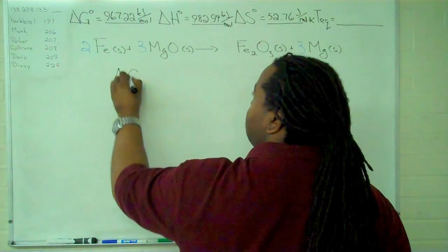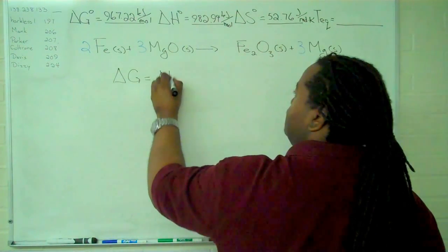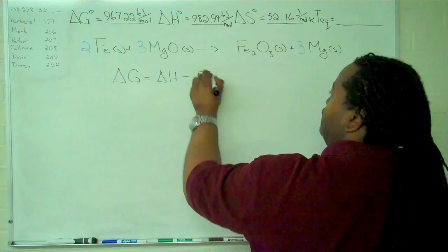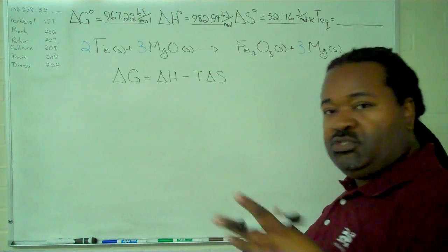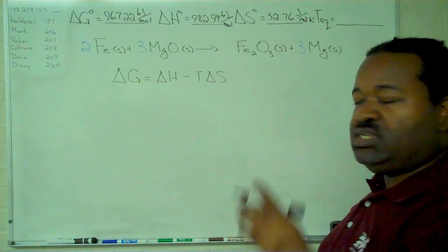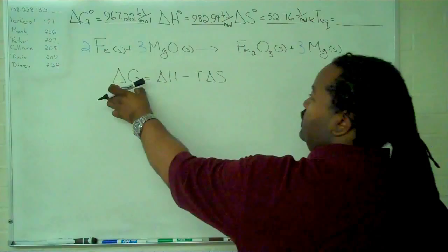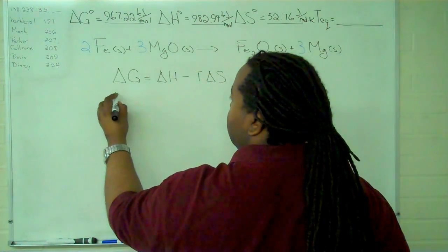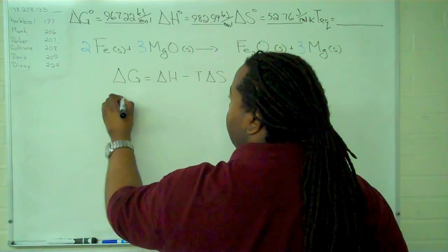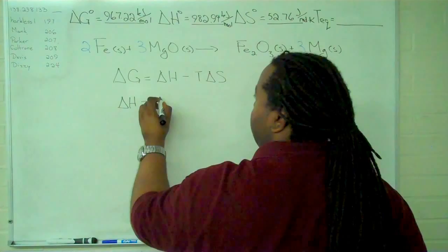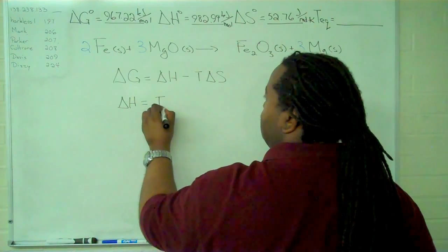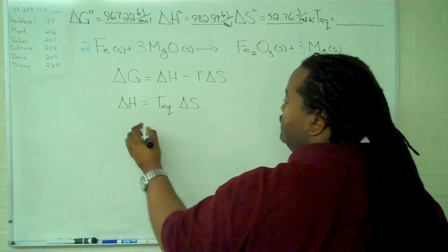So what we mean by that is this: delta G equals delta H minus T delta S. If we assume that these values hold true enough over a range of temperatures, then if delta G is 0 at equilibrium, we have delta H equals the equilibrium temperature times delta S.